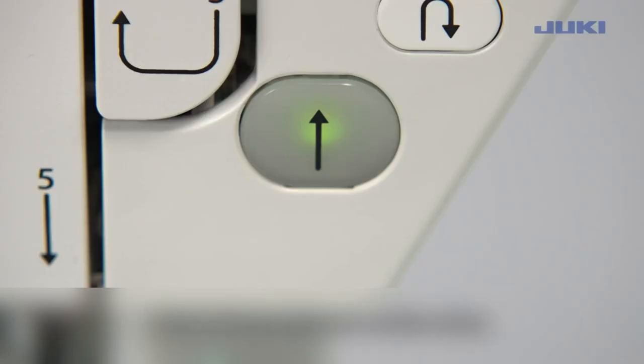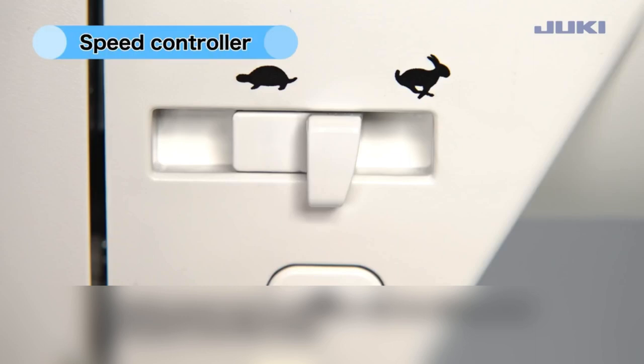All the essential buttons, including the thread trimmer, low, high needle, presser foot lift, speed control, and more, are conveniently located on the sewing head for easy access.